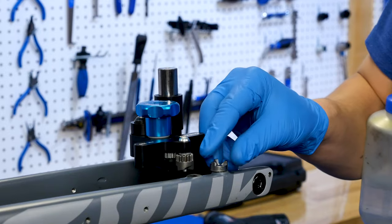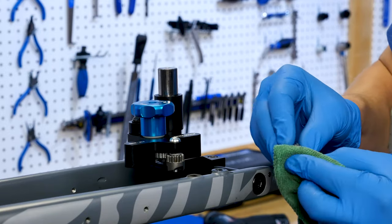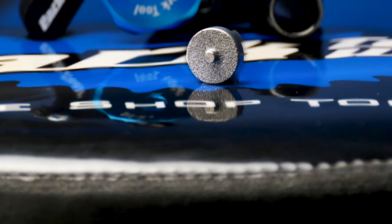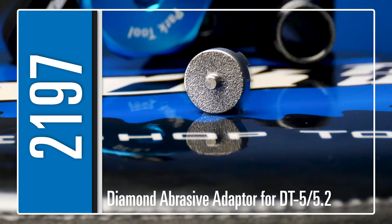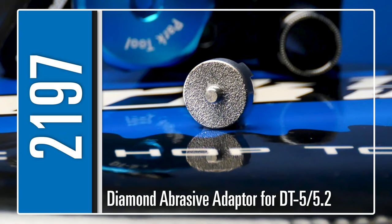After finishing your work, clean and dry the 2197 and apply a light lubricant for storage. The 2197 Diamond Abrasive Adapter is the most efficient way to put a precision finish on carbon fiber brake mounts.